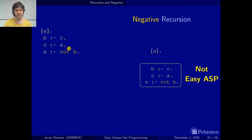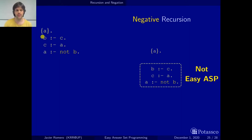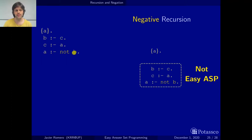And if we go through the rules, we can say that B depends on C, which depends on A, which depends on not B. So the predicate B — the atom B — depends on the predicate B that is negated here, on the literal not B.